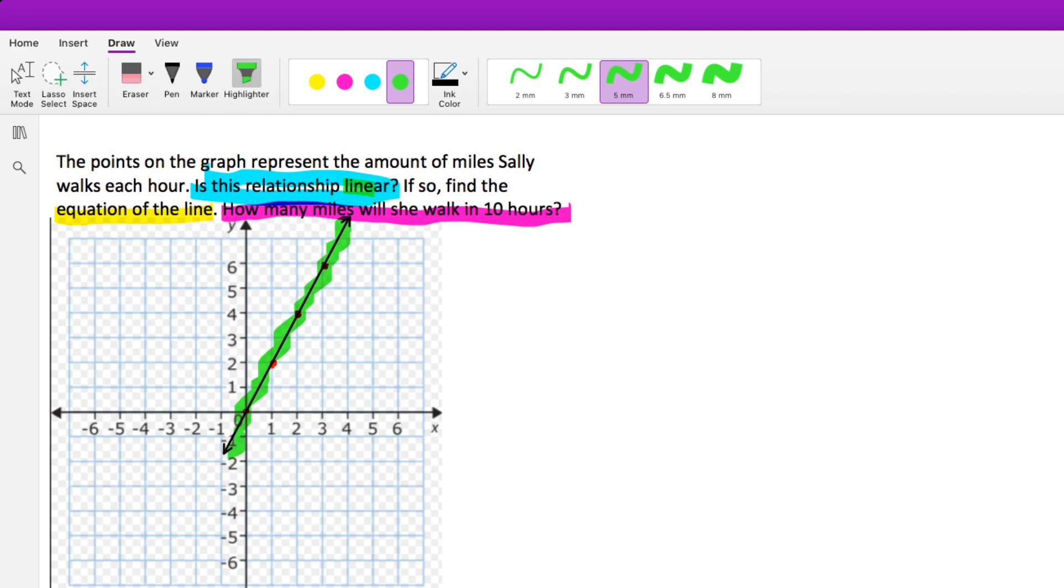However, that is just me assuming. It is not good for us to assume because we'll get into a lot of trouble in life. So, let's not assume things. How can we know for sure if this relationship is linear? Let's find the slope.